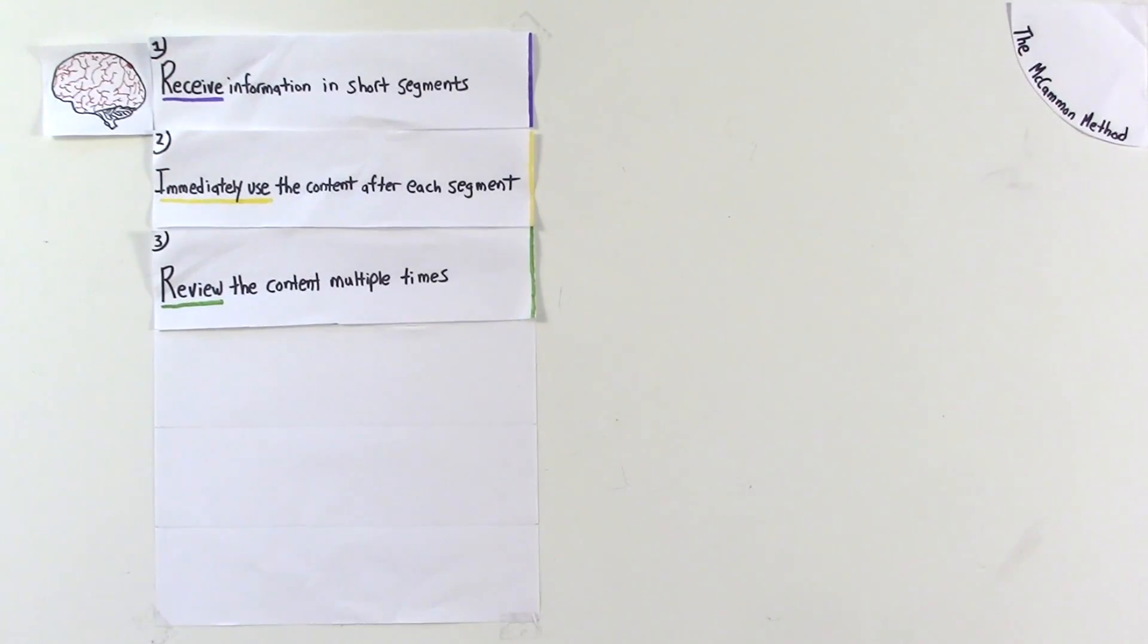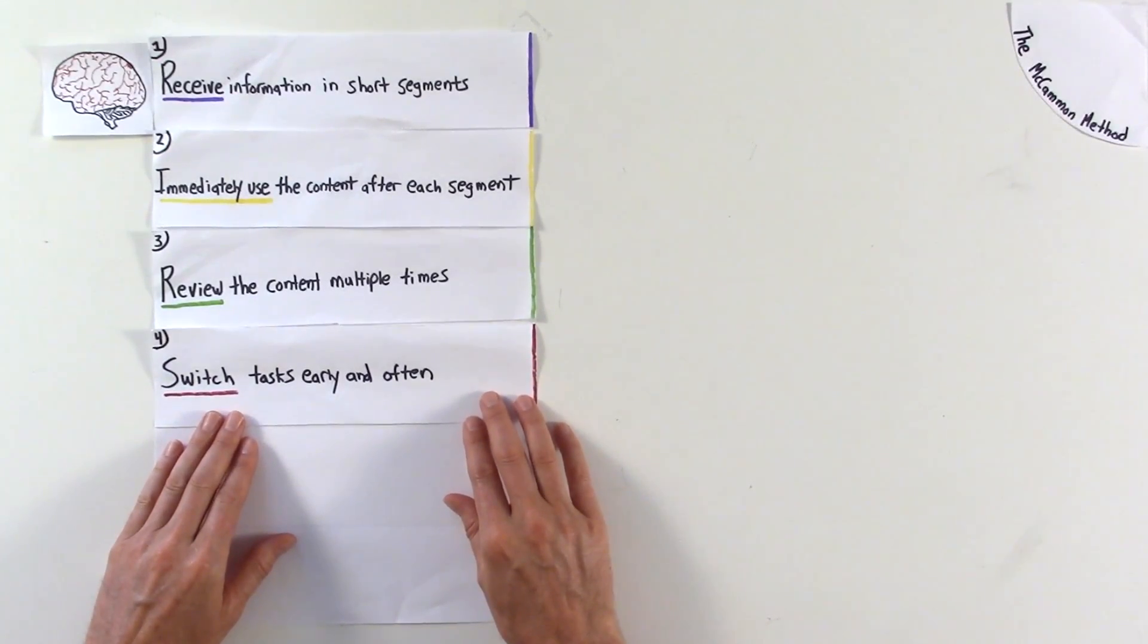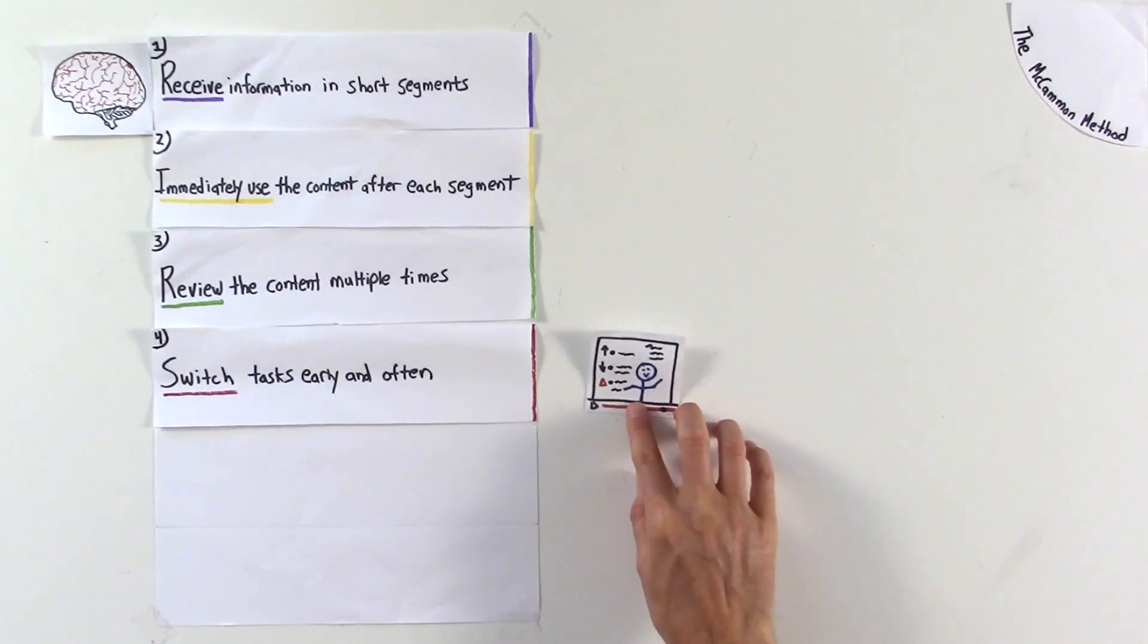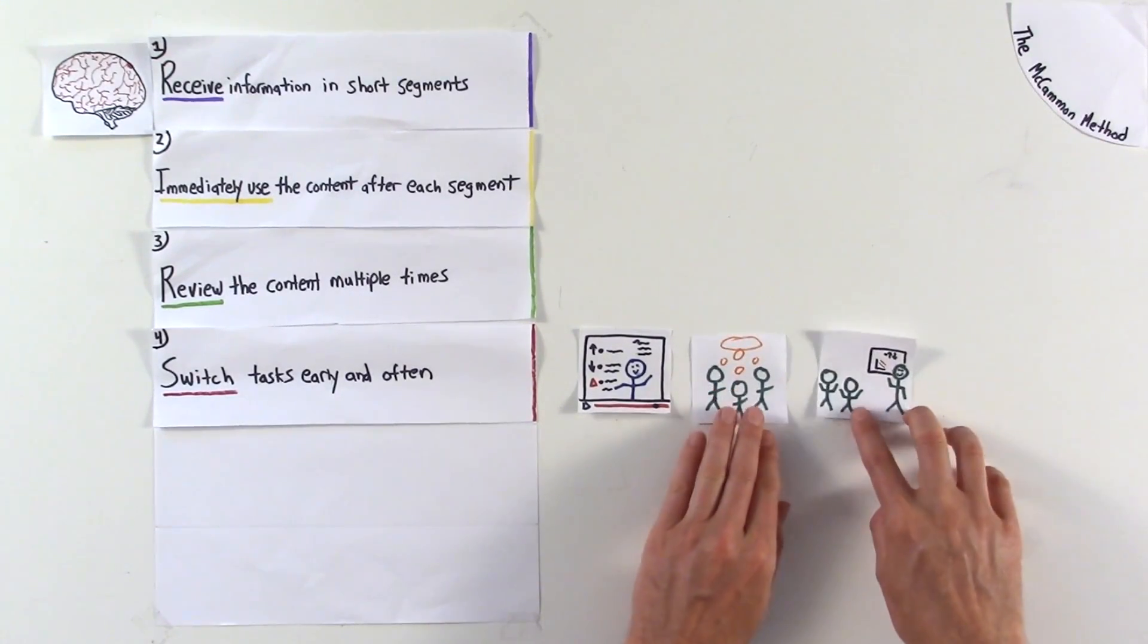Students should switch tasks early and often. This will constantly refocus student attention and increase engagement. Here's one way to think about doing this. Play a five-minute video segment, then give the students five minutes to collaborate and reteach the segment.